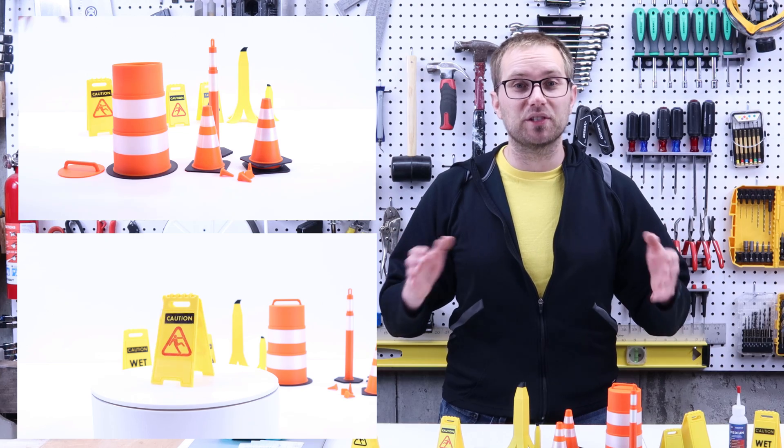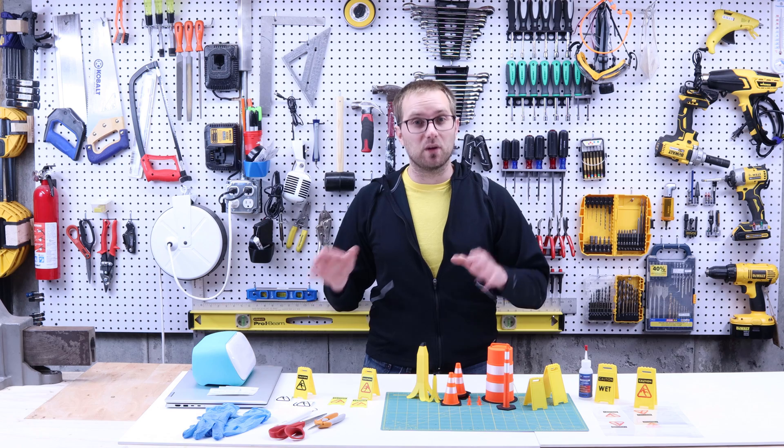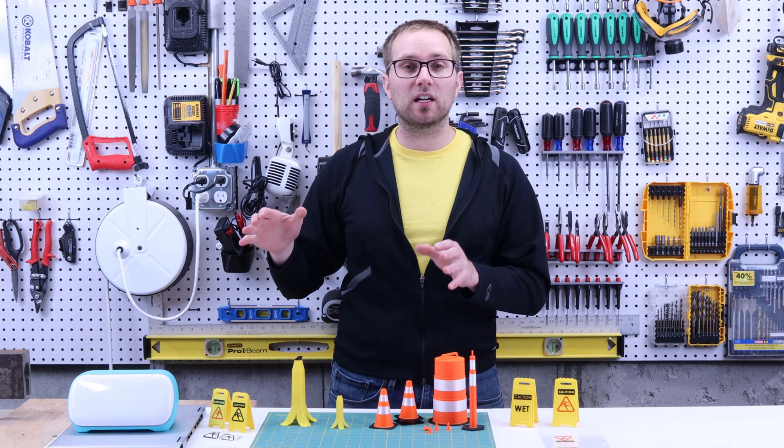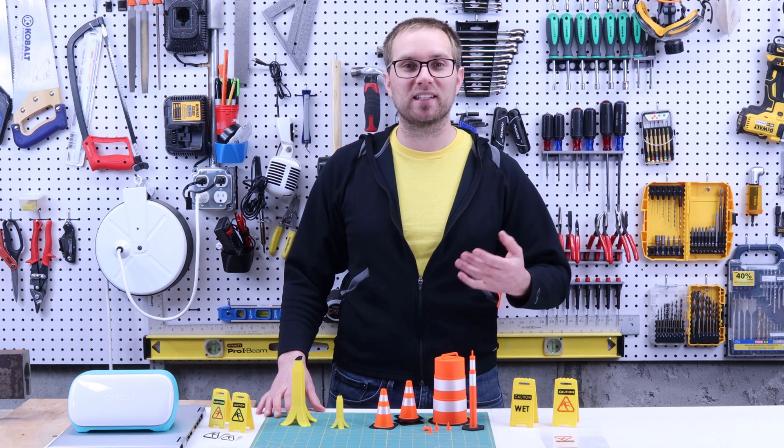Today we're going to use a 3D printer to make tiny traffic cones and slippery when wet signs. If you have a 3D printer or access to one, this is a really simple project. For most of this video I'm going to be talking about the four different methods I use to add graphics or images to my 3D prints.